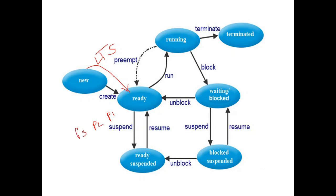The process is selected from the ready queue by the short-term scheduler, which selects processes based on the scheduling algorithm. Suppose process P1 is selected and sent to the running state for execution by the CPU. Once P1 finishes its execution, it will be sent to the terminate state by the short-term scheduler. This is the first possibility.